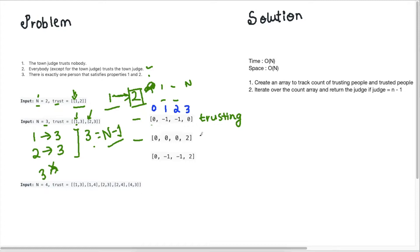Looking at the 'trusted' array — who is being trusted — nobody trusts person 1, nobody trusts person 2, but person 3 has two people trusting them: person 1 and person 2. So if a person's trusting count is 0 and n-1 people trust them, we can clearly figure out who the judge is. In this case, the judge is at index 3.